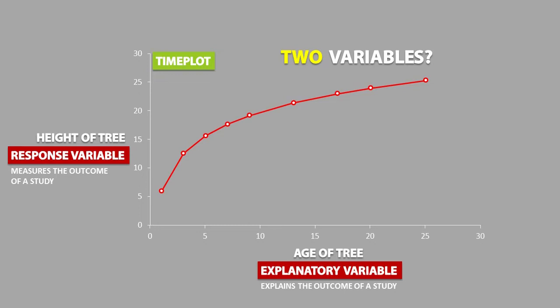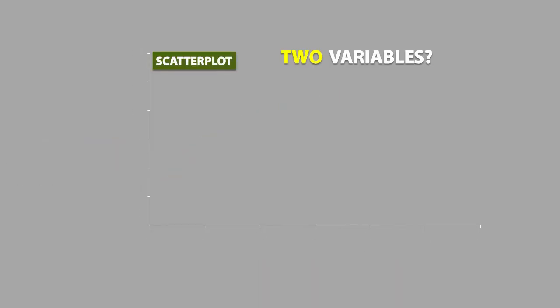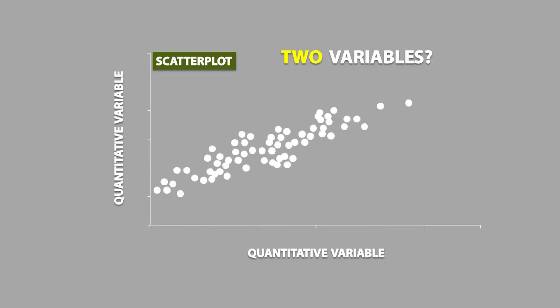Another way to show the relationship between two variables is by using a scatter plot. Unlike a time plot, a scatter plot does not need to show time on the x-axis. A scatter plot shows the values of two quantitative variables that were measured from the same population of individuals.